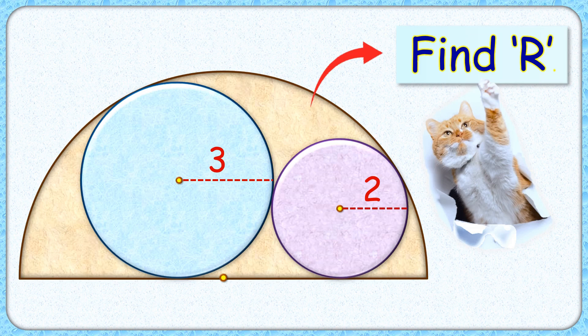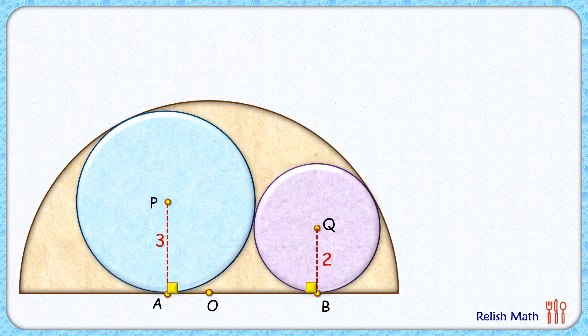Welcome everyone. We have an interesting question: two circles of radius 3 and 2 centimeters are touching each other inside a semicircle. The exciting part is that with this limited data we have to find the radius of the semicircle. Let's check this simple and elegant solution. Point O is the center of the semicircle.